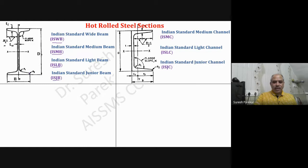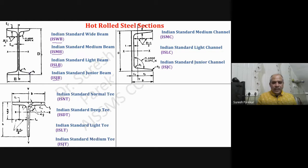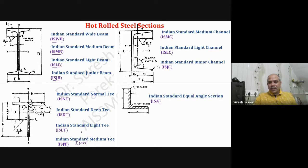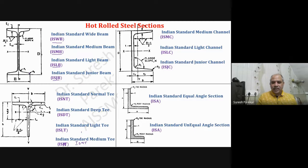Then ISJC - Indian Standard Junior Channel. Then we have ISNT - Indian Standard Normal T, Indian Standard Deep T, Indian Standard Light T, Indian Standard Junior T, and ISMT - Indian Standard Medium T. Then we have ISA for Indian Standard Equal Angle sections where a equals b.